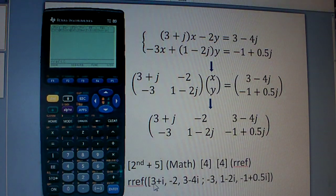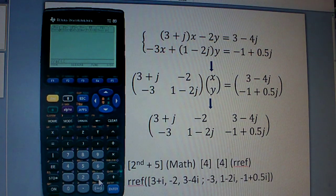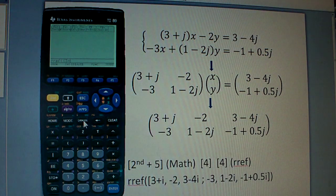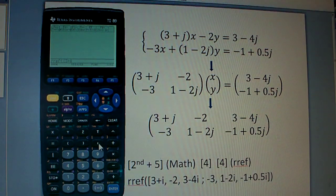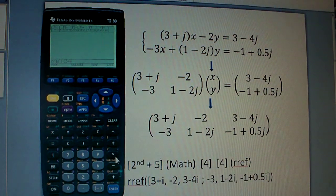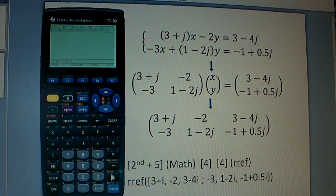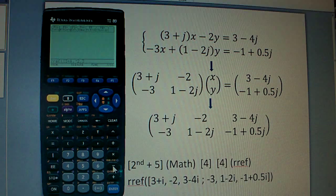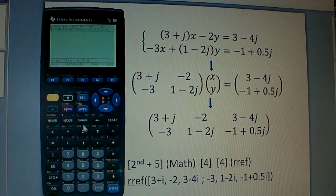And then you start plugging these numbers, 3 plus I. 3 plus I is above the catalog. And then every time you finish a number, you put a comma: negative 2, 3 minus 4 I.